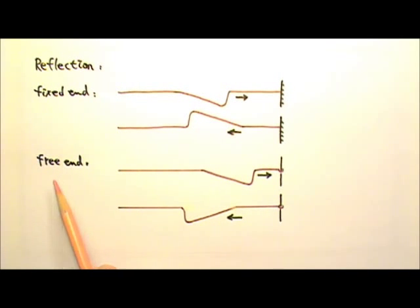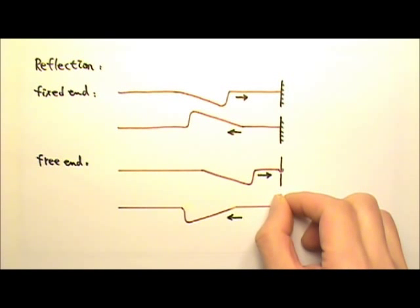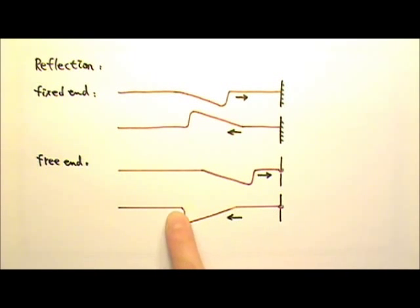When the end is free to move, in this case, I made a loop at the end so it can move up and down along this pole. This way, when the downward hump reaches the end, it pulls the end down and the end would move downward, and therefore the hump stays downward. Again, the steeper edge used to be in the front, and it is still in the front after reflection.